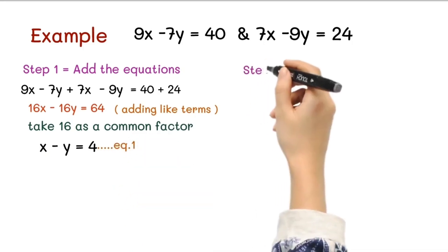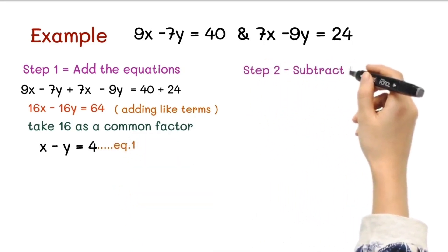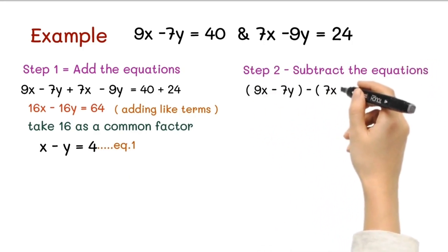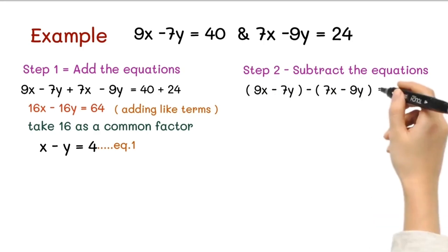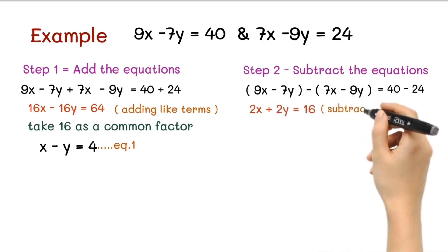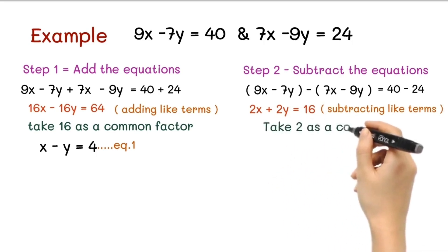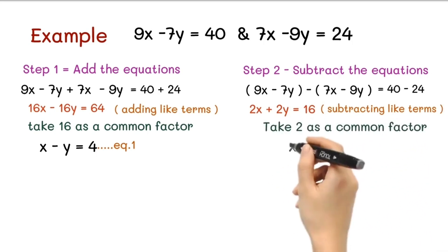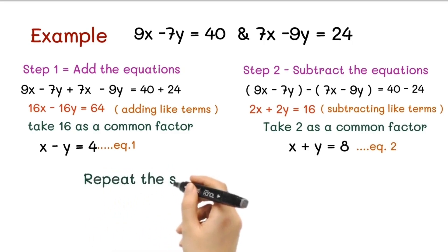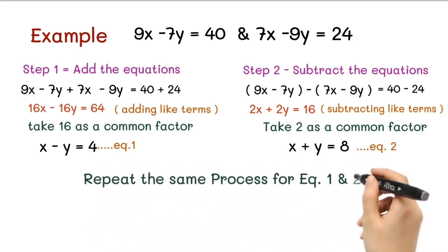Now in the next step we will subtract both equations. By subtracting the equations we get 9x - 7y - (7x - 9y) = 40 - 24, that is 2x + 2y = 16 by subtracting the like terms. If we take 2 as a common factor from both sides, then we get x + y = 8, and this is our equation 2. Now we need to perform the same operation for equations 1 and 2.